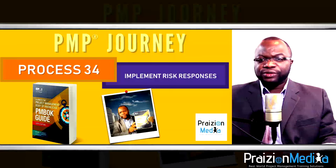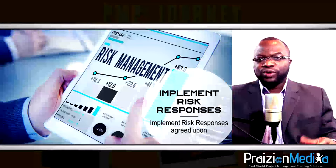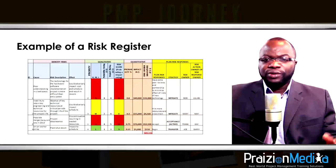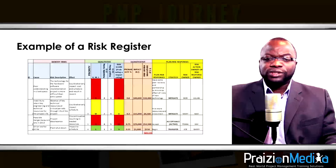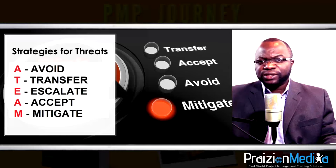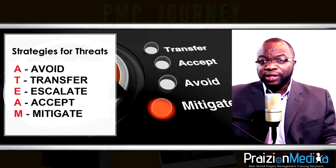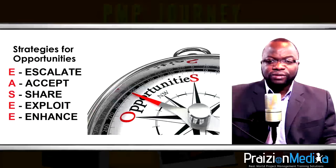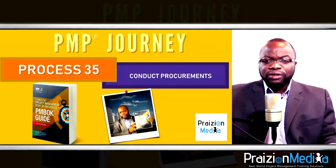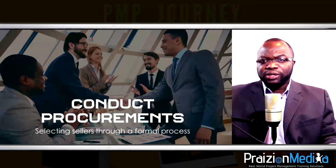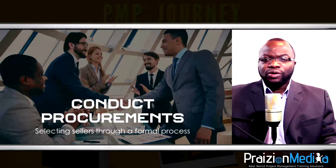Process 34: Implement risk responses. You've planned your responses — now this is where you carry them out. Risk owners and risk action owners take ownership for actions to curtail, contain, or avoid risks. This is a practical hands-on process to transfer, avoid, mitigate, accept, share, enhance, exploit, and escalate risks. Process 35: Conduct procurements. Your major goal is to carry out the bidding process — having bidder conferences, reviewing proposals, and ultimately selecting a seller and signing a contract.